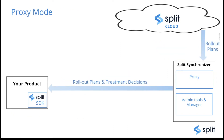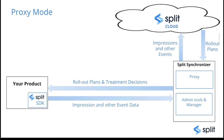In proxy mode, as mentioned, there is no Redis database. The rollout plans and treatment decisions go directly into the SDK, and the SDK connects directly to the Split Synchronizer. The benefit here is that the synchronizer is the only process that connects to Split cloud, instead of having multiple SDK processes connecting to it. Of course, having Redis means you can scale, because in-memory storage has a limit, so it is more scalable to use a database for this kind of configuration.